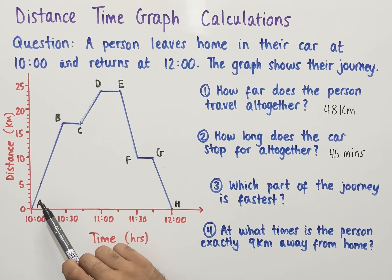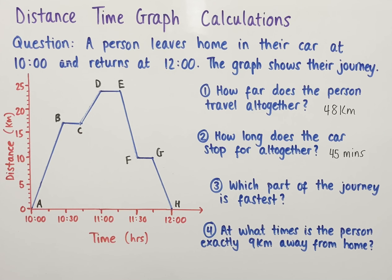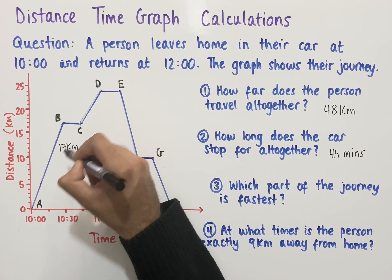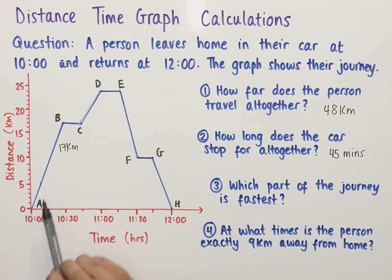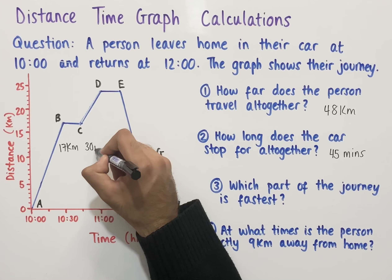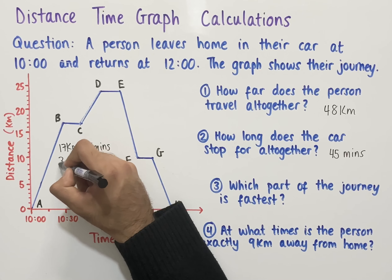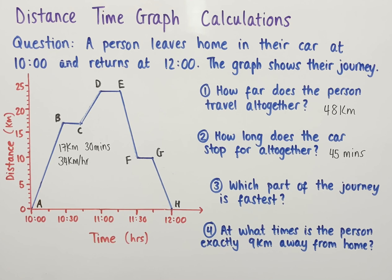Working out the gradient of the line between A and B: we start at 0 kilometers and end at 17 kilometers, so the distance traveled is 17 kilometers. That distance is covered in half an hour or 30 minutes, since we start at 10 o'clock and reach B at 10:30. So 17 kilometers in 30 minutes gives us 34 kilometers per hour for the speed between A and B.